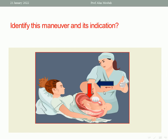The first question: identify this maneuver and its indication. In this picture, this maneuver is the McRoberts position. McRoberts position is done by extreme flexion of the thighs toward the woman's abdomen in cases of shoulder dystocia. So the indication is shoulder dystocia — delivery of the head with difficulty to deliver the shoulder. We also apply suprapubic pressure alongside McRoberts position, which together is called the Rubin I maneuver.